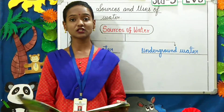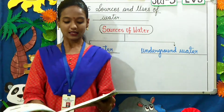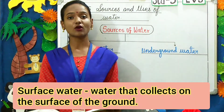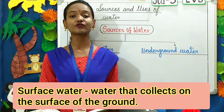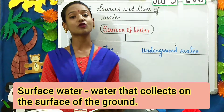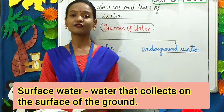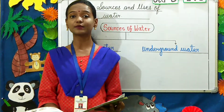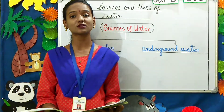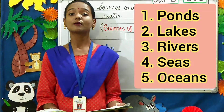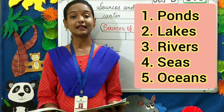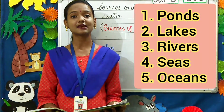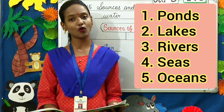What is surface water, children? Water that collects on the surface of the ground is called surface water. A few examples of surface water are ponds, lakes, rivers, seas, and oceans.